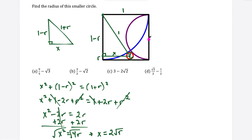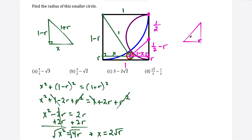Now moving on to the half circle. I'll draw in the center on the right side. Since the square has side length one, the center is at the midpoint, so each half of that side is one-half. I'll draw in a few more line segments. The bottom space from the circle's center down to the bottom is still R, and the vertical leg of this new triangle is one-half minus R, since we subtract that little piece R.